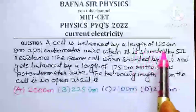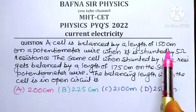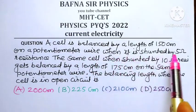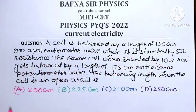A cell is balanced by a length of 150 cm on a potentiometer wire when it is shunted by 5 ohm resistance.